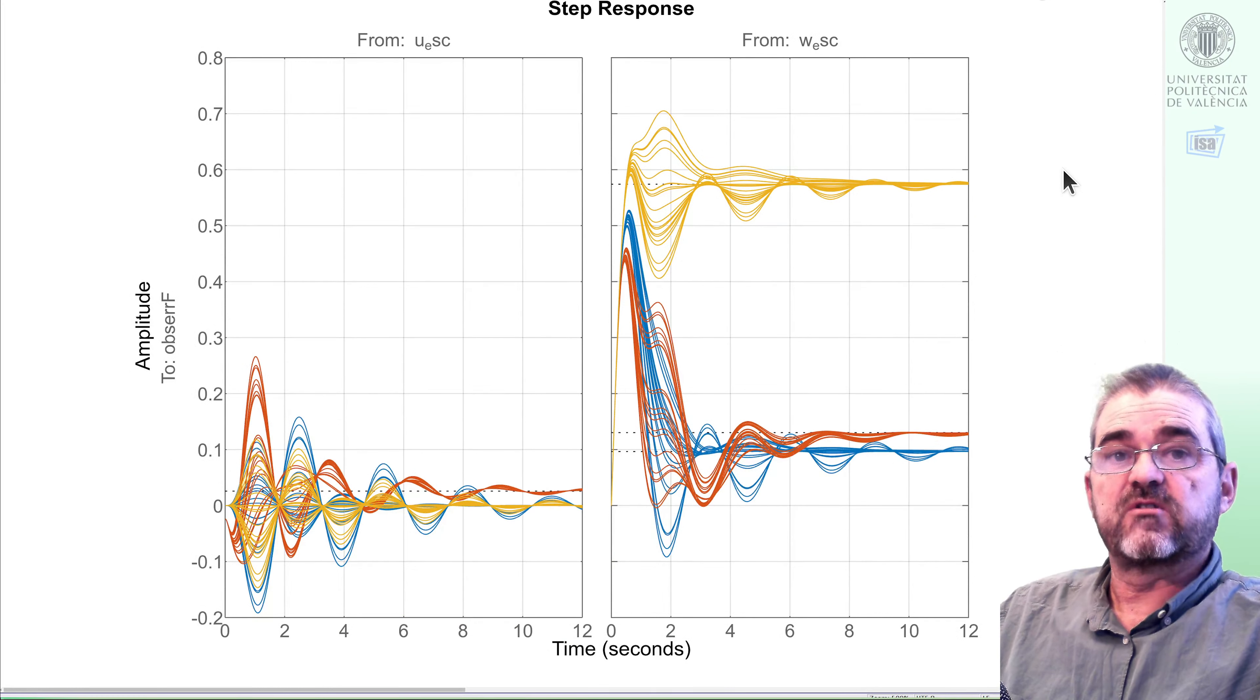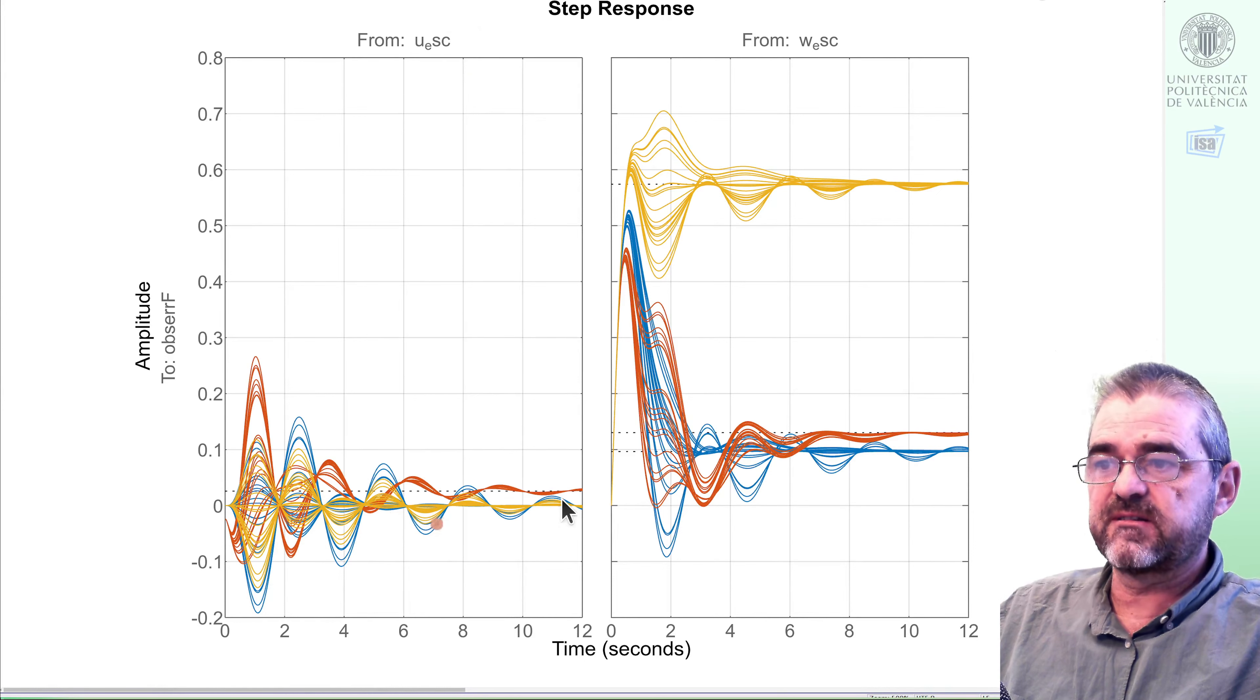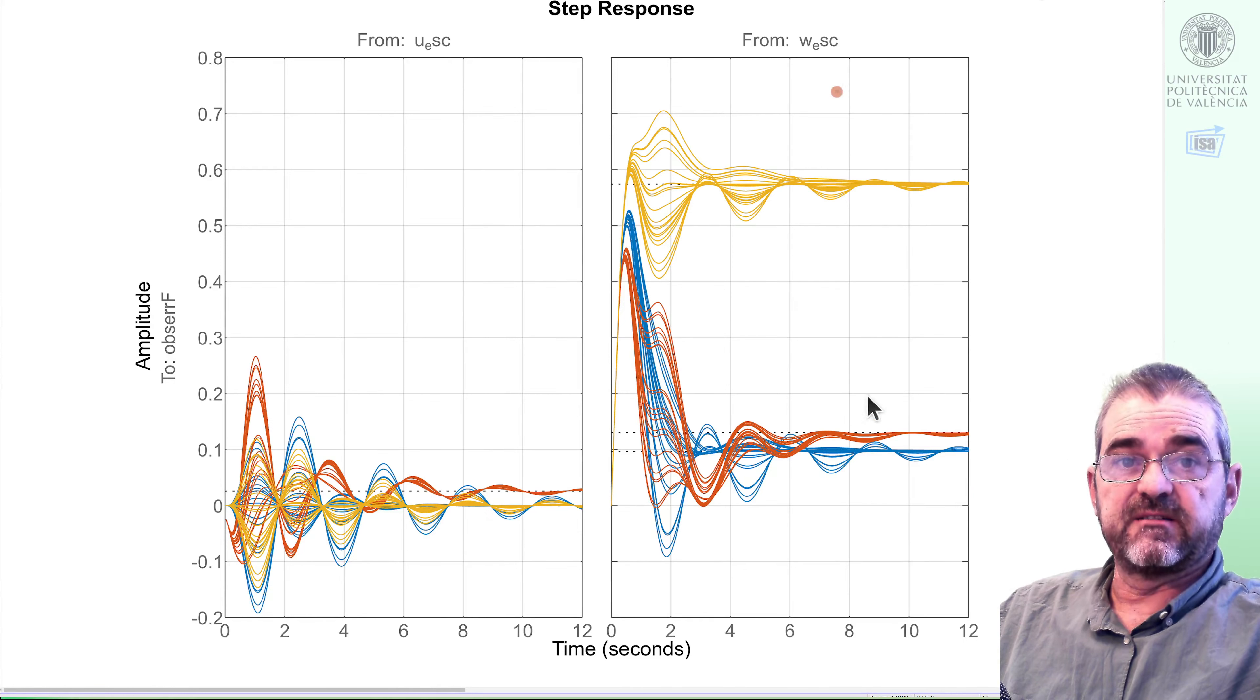So this is the step response for a bunch of random plants, and we see that there are oscillations because the damping is unknown. So even if for the nominal plant the H2 and H infinity observers with a step in known input they would render zero force estimate, as the model is uncertain the force estimate is not zero.